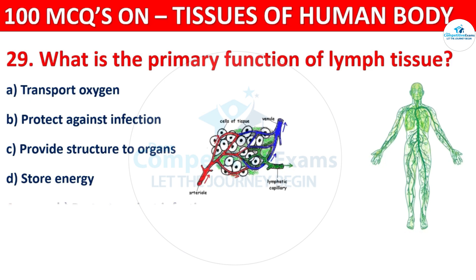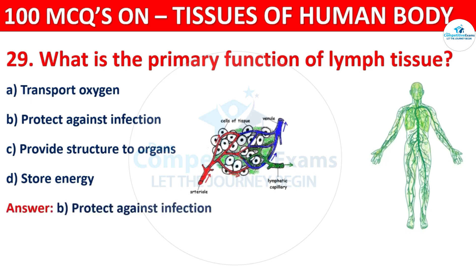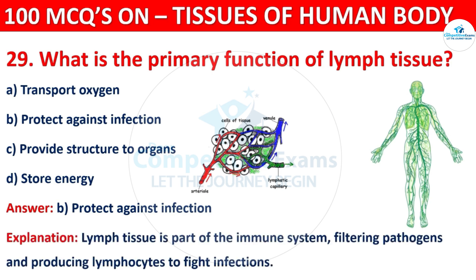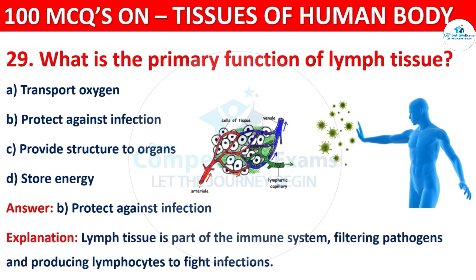The correct answer is B, i.e. Protect Against Infection. Lymph tissue is part of the immune system, filtering pathogens and producing lymphocytes to fight infection.